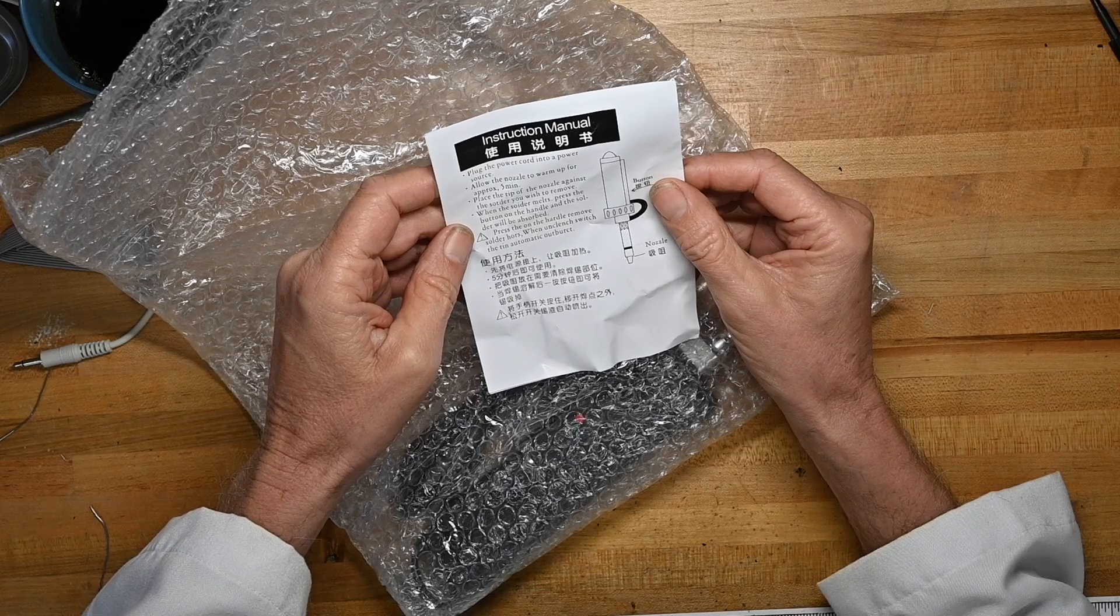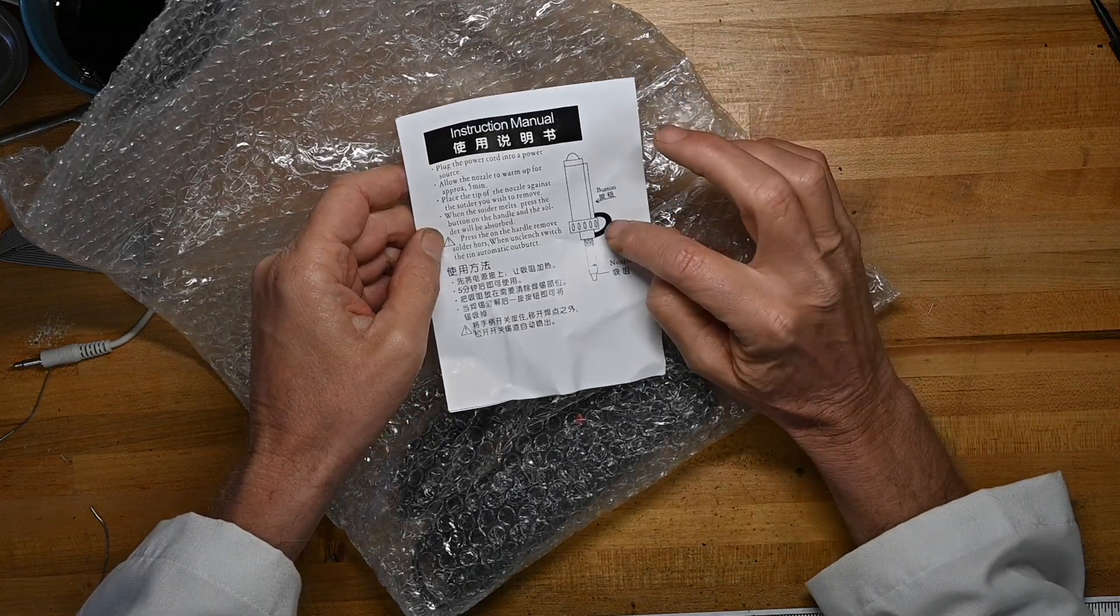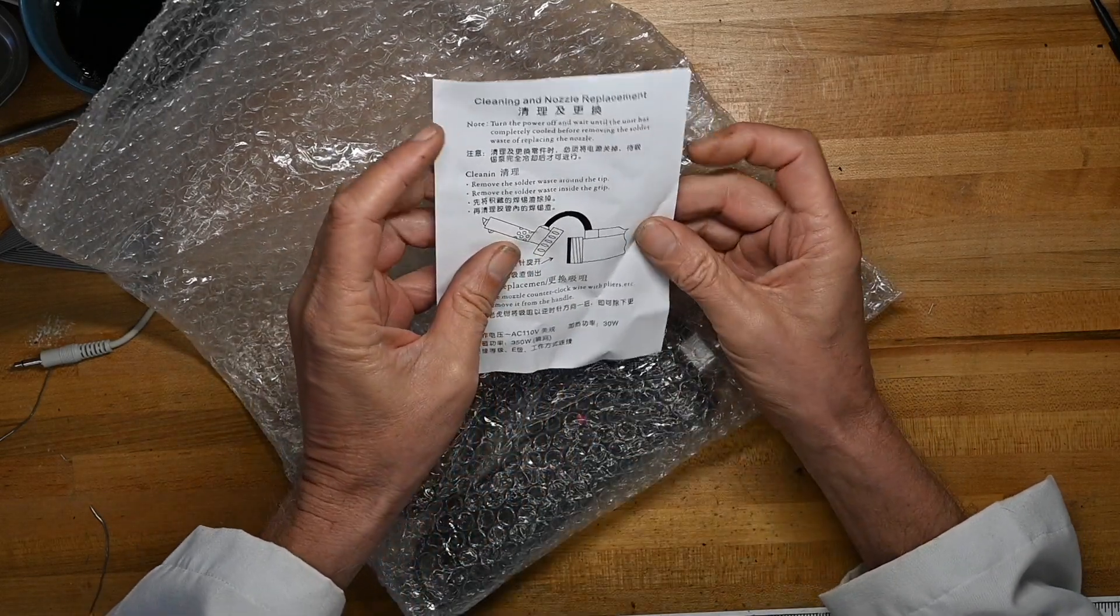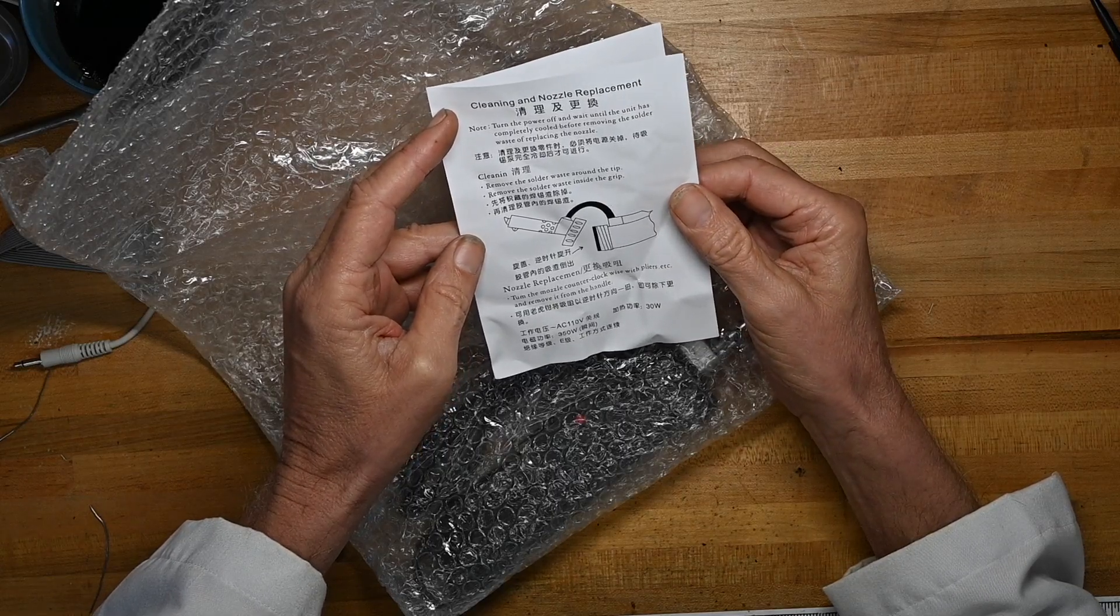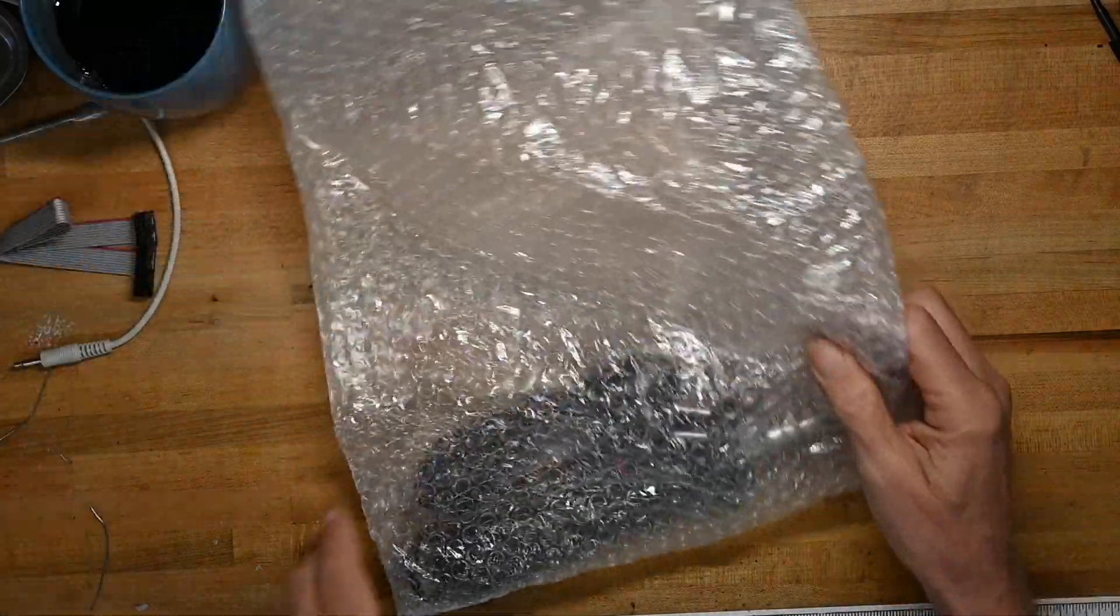I think press on the handle remove the solder hose. It looks like there may be a hose there and that's how you get rid of the excess solder. Cleaning and nozzle replacement. It shows you how to clean it and that's all very good. Nice little manual.